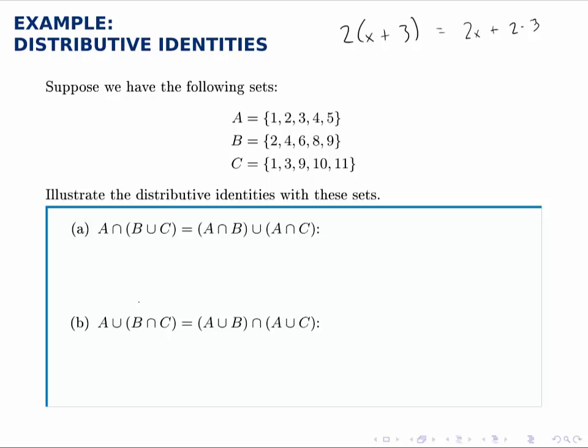It turns out if we flip them and do A union B intersect C, we can also distribute that union across the intersections, which is a little less like the distributive identity from algebra, but it's the same principle. We're distributing one operation across the other. Again, as before, we're not going to prove these identities, but we'll illustrate them by calculating both sides and showing that we get the same answer either way.